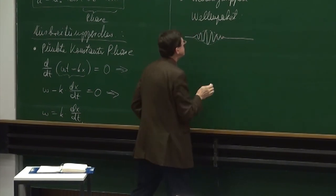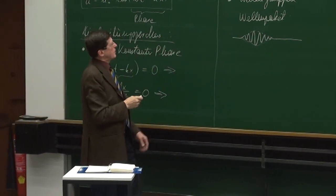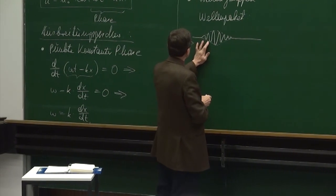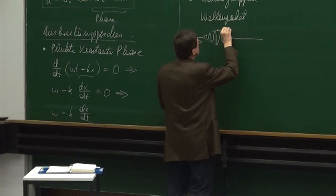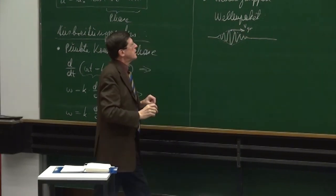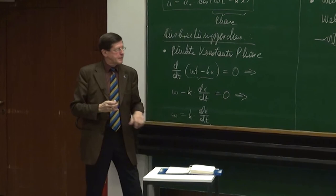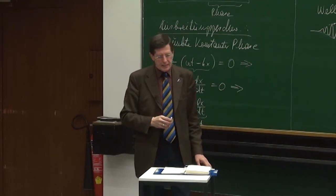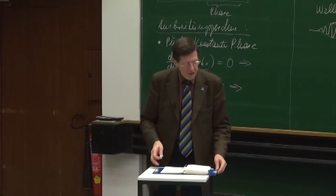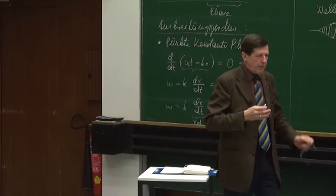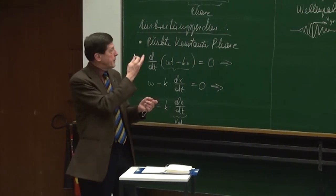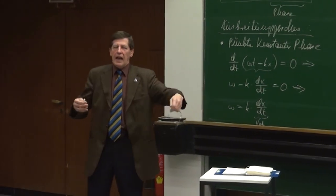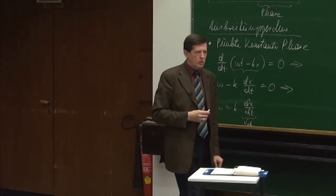Die Geschwindigkeit, mit der sich ein Wellenpaket ausbreitet, das ist im Wesentlichen die Geschwindigkeit, mit der das Maximum dieser Einhüllenden sich bewegt. Und das nennen wir die Gruppengeschwindigkeit. Diese Gruppengeschwindigkeit wollen wir uns jetzt näher anschauen. Wie können wir die darstellen? Wie können wir überhaupt so ein Wellenpaket zurückführen auf das, was wir bisher kennengelernt haben, auf diese gleichmäßigen Wellen, die sich im Raum ausbreiten?